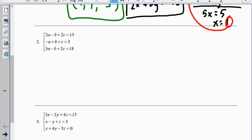Here's problem 2. 2a minus b plus 2c equals 15, negative a plus b plus c equals 3, 3a minus b plus 2c equals 18.